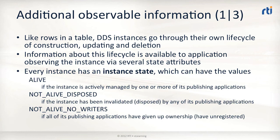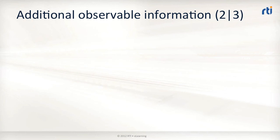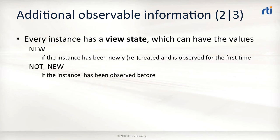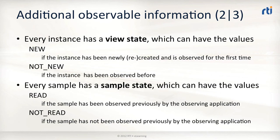Additionally, observers can observe the view state of an instance. This field indicates whether an observer has already seen this instance before or not. If so, the instance has a view state called 'not new'; otherwise, the view state is called 'new'. This allows an application to detect the construction of new observable items. Finally, the sample state can be 'read' or 'not read', to indicate whether an observer has seen a particular instance update before or not.